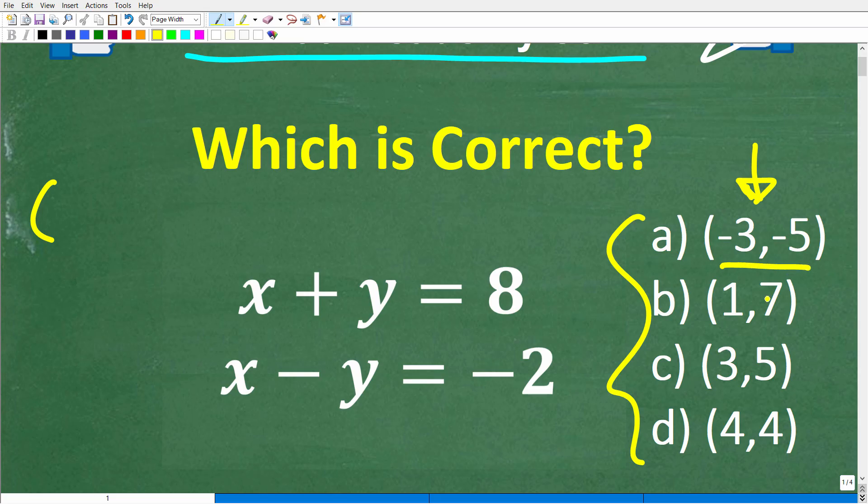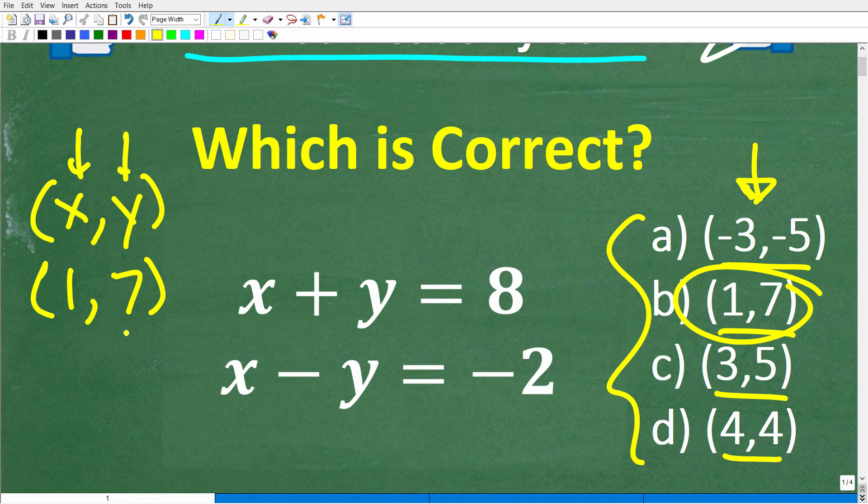For those of you that are confused on the answer choices, in other words what they represent, let's talk about that right now. What we are looking at is something called ordered pairs or coordinates or x, y points. Basically, these are two points or two coordinates, x and y.